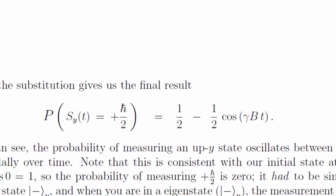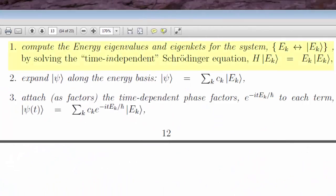That's a lot to take in, so I'll summarize. One. Compute the energy eigencats for the system. But for quantum computing, they're always the same, ket plus and ket minus, so there's nothing really to do.